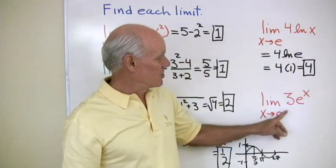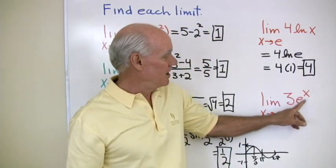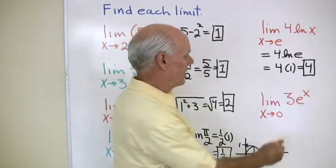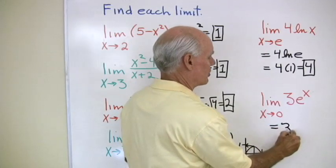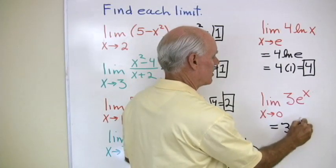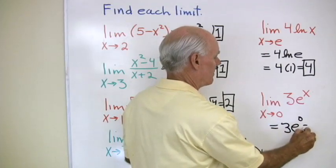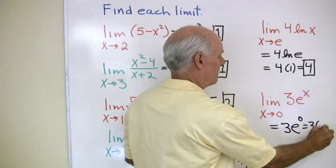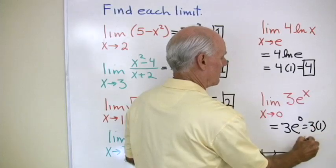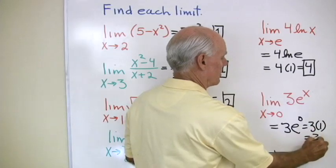And the limit as x goes to 0 of 3e to the x. It's an exponential function, so I substitute: 3e to the 0. e to the 0 is 1, so that's 3 times 1, which is 3.